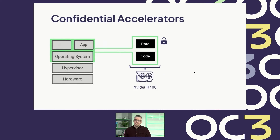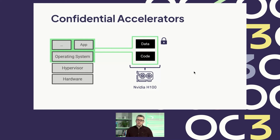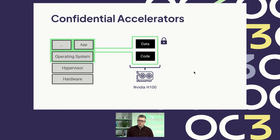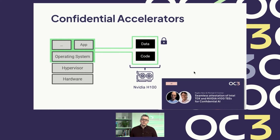A recent development is confidential accelerators. NVIDIA started adding confidential computing features to their H100 AI accelerators, and that's super exciting, because now for the first time we can run AI workloads with confidential computing guarantees. This opens up quite a few new applications. On the technical level, we have a talk by Intel describing how to set up the secure channel between the confidential VM and the AI accelerator.